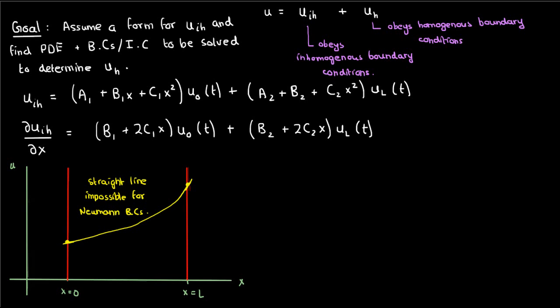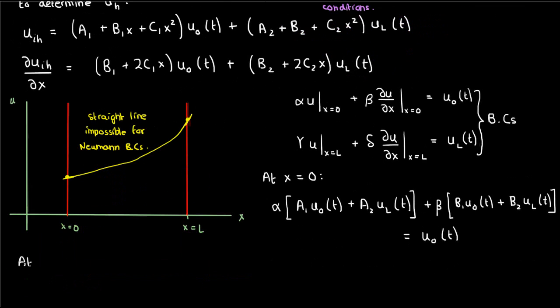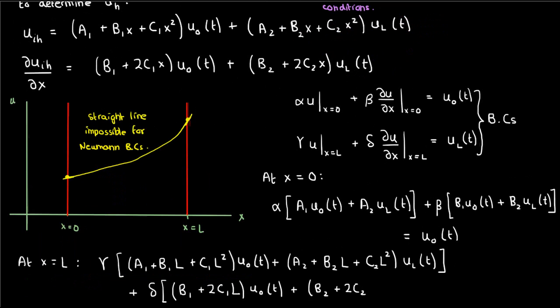So let's take this UiH and apply those general boundary conditions to it. Let's start out at x equals 0, in which case this is what we have. Then let's go to x equals L, and here's what we get at that boundary. Now this leaves us with two equations and six unknowns, which is kind of impossible to solve without making some assumptions.